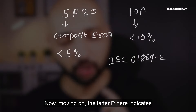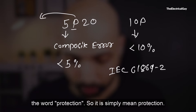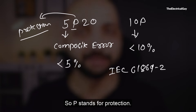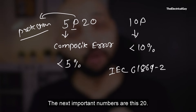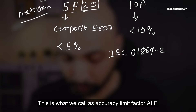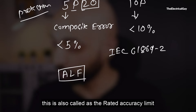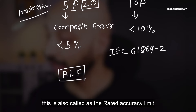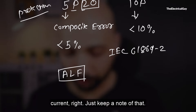The letter P indicates protection — P simply stands for protection. The next important number is 20. This is very important and is what we call the Accuracy Limit Factor, or ALF. This is also called the rated accuracy limit current.